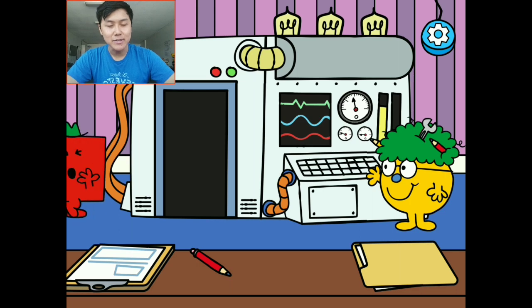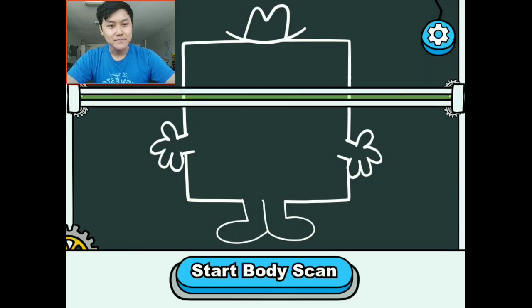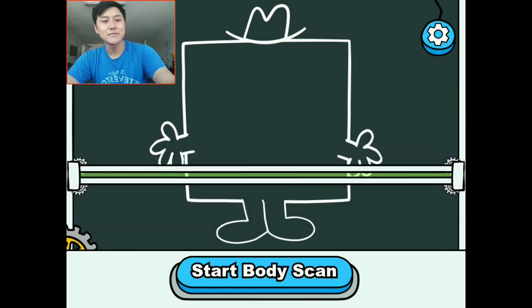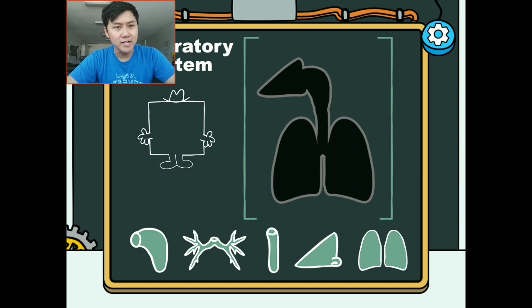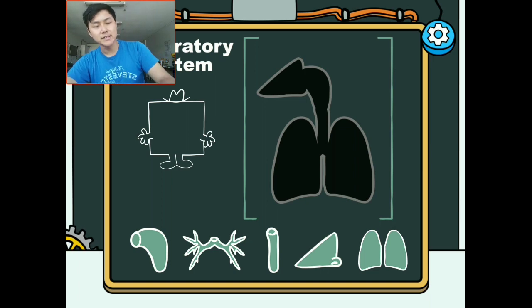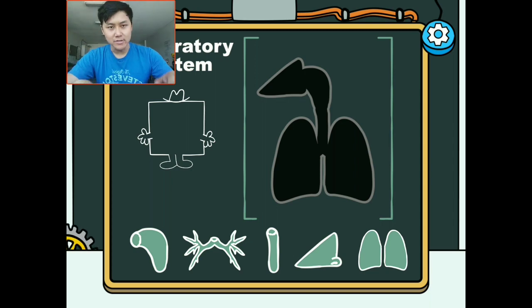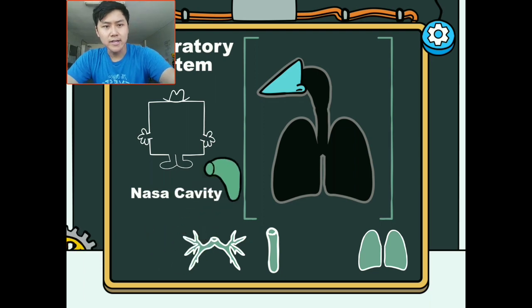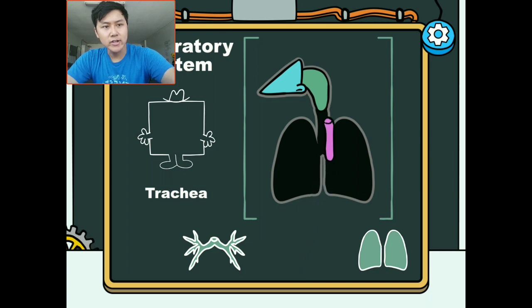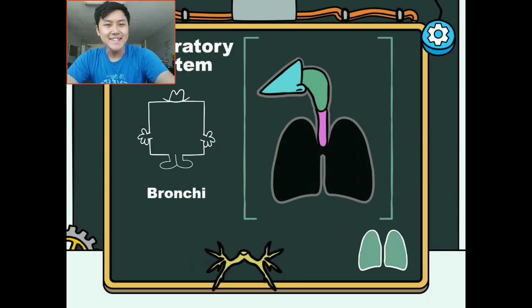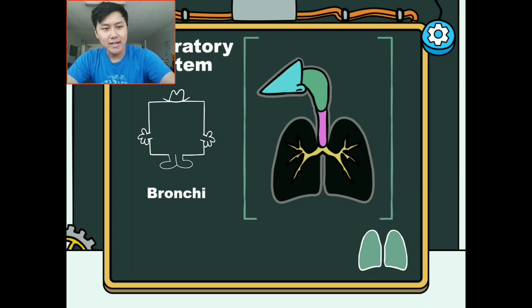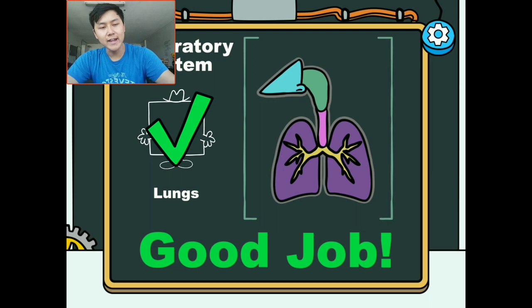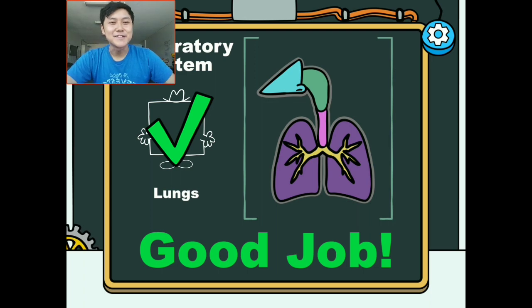Mr. Strong needs to get healed up so he can become strong again — he looks very sick. So we're going to start with the body scan right here. It looks like we are trying to fill in his respiratory system. The respiratory system is the system in your body that helps you breathe — when you breathe in and out, the air goes through. The air goes through your nose, then down your nasal cavity, into the trachea, then into your bronchi, and then the bronchi goes into both of your lungs to give the air flow through. That is your respiratory system.